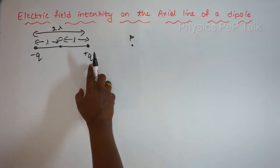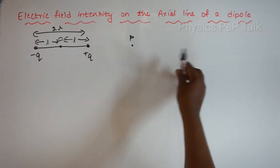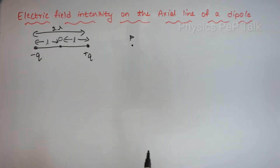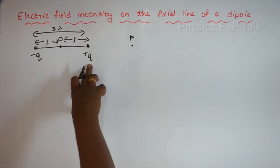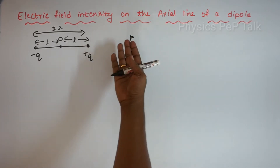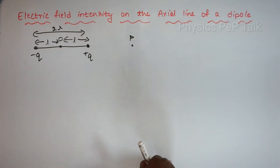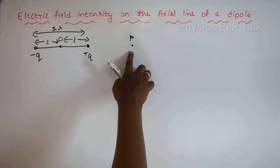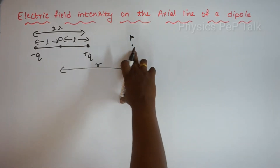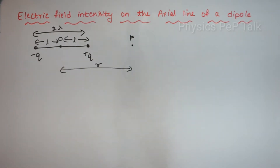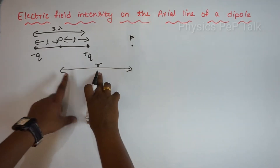When a unit positive test charge is placed at P, due to plus Q it will experience a repulsive force in this direction. Electric field intensity due to minus Q will be in the attractive direction toward minus Q. Since point P is closer to positive charge, the electric field intensity in that direction will be greater. I will consider this point P to be separated at a distance R from the midpoint of the dipole. The distance between point P and minus Q will be R plus L.